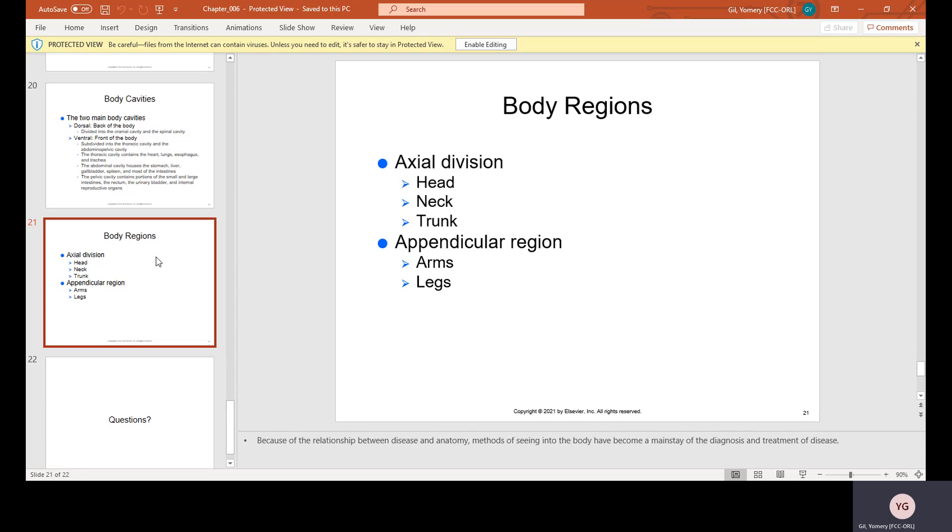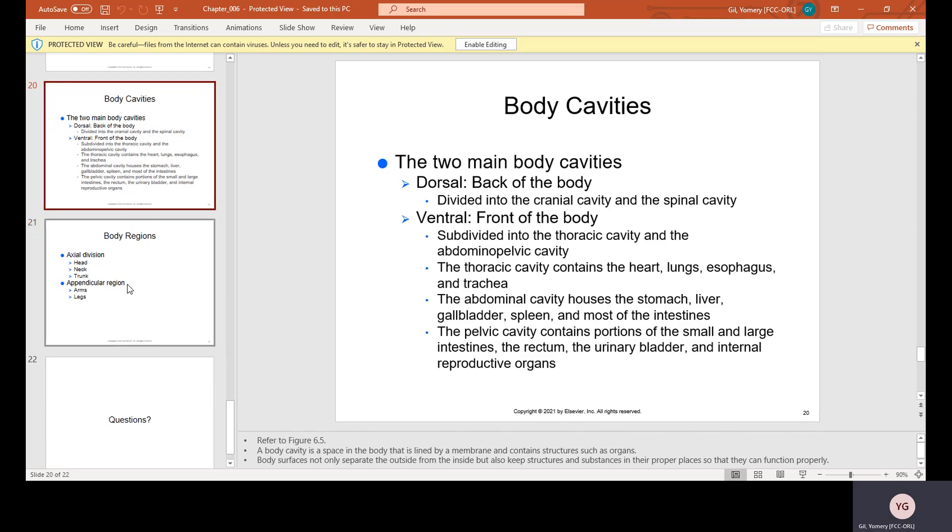What are the two major body cavities? They're the dorsal, which is the back of the body, and then the ventral, which is the front of the body.